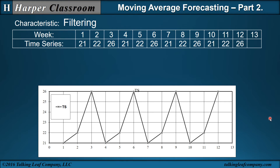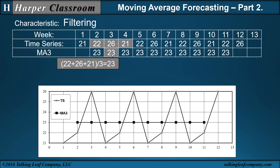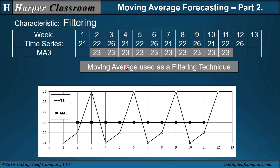The next characteristic is filtering. Here we have another time series: 21, 22, 26, 21, 22, 26. If I apply my three-point moving average, I'm going to apply it as a filtering tool, not a forecasting tool. What that means is, when I average three values, I apply that average to the middle of that interval — not the next time period, but the middle of the interval. Then I move to the next three, then the next three. So when I plot these, I'm really using moving average as a filtering technique, not a forecasting technique.